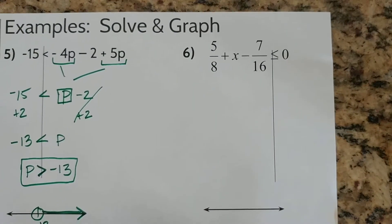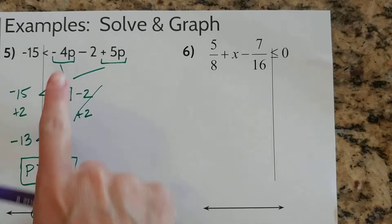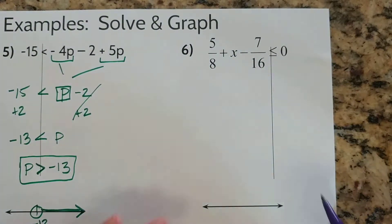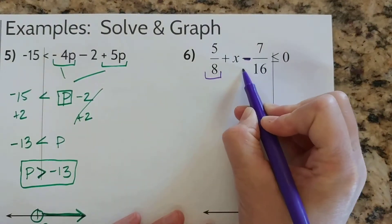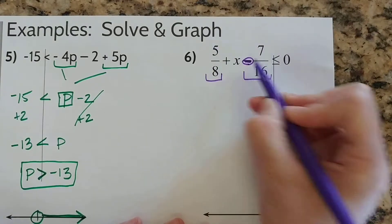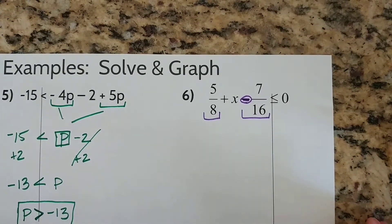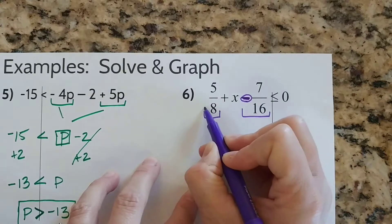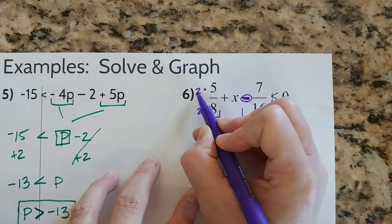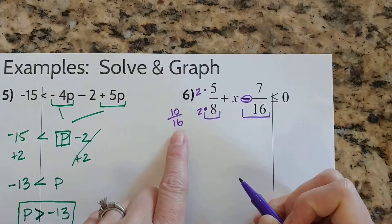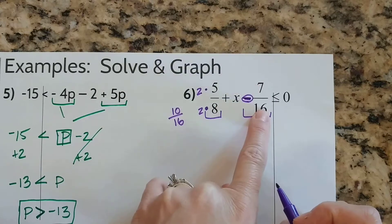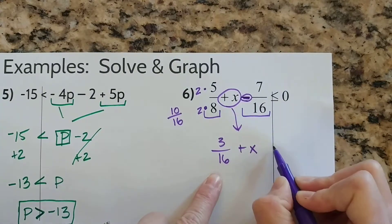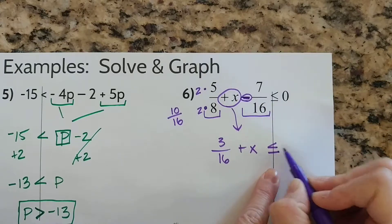Number 6 — see how this one's different? Over here we had to combine the terms with the variable, and over here we're going to combine the terms that don't have the variable. We have 5 eighths take away 7 sixteenths. To subtract fractions you need a common denominator — the common denominator is 16. So I need to change 5 eighths into 16ths by multiplying by 2, giving me 10 over 16. Now I can take 10 sixteenths minus 7 sixteenths: 10 minus 7 is 3. Then bring down the plus x and bring down the inequality symbol and the 0.